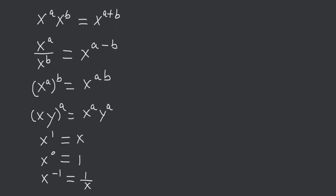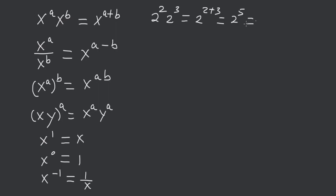In this video I'm going to show you the rules of exponents. Here we have x to the a times x to the b is equal to x to the a plus b. So you have 2 to the 2 times 2 to the 3. This is equal to 2 to the 2 plus 3, is equal to 2 to the 5, is equal to 32.